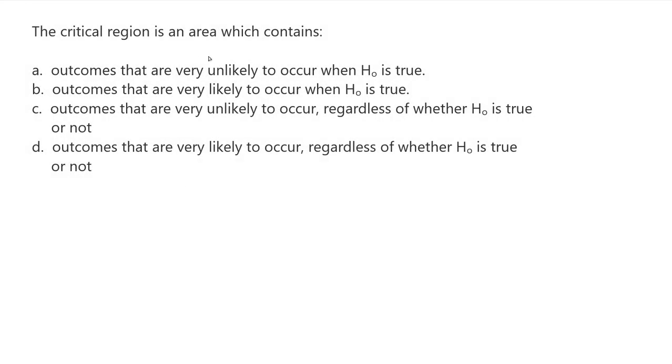The critical region is an area which contains: A. Outcomes that are very unlikely to occur when the null is true. B. Outcomes that are very likely to occur when the null is true. C. Outcomes that are very unlikely to occur regardless of whether the null is true or not. D. Outcomes that are very likely to occur regardless of whether the null is true or not.